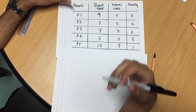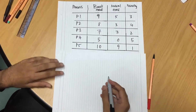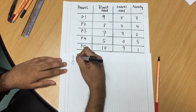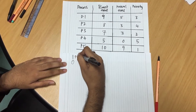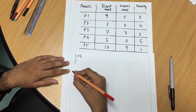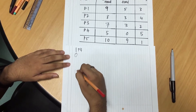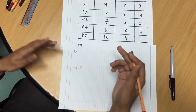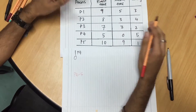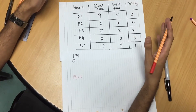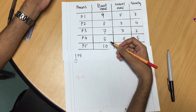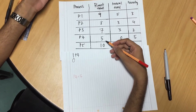From this, we know that P4 started first. So let's write it down — at 0 seconds, before beginning the execution, let's write down the burst time of P4. The burst time is the time for it to execute. The remaining time for it to execute is 5 seconds.